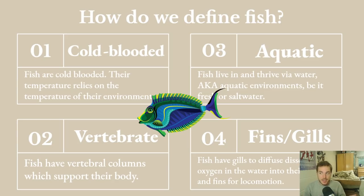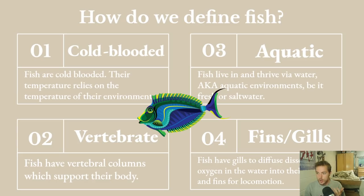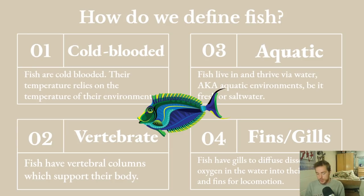Number three, fish live in and thrive via water — aquatic environments — whether it's freshwater, saltwater, or brackish water in between. Fish are aquatic by definition. And four, fins and gills: fish have gills that diffuse dissolved oxygen from the water into their blood, and fins for locomotion. These are the four general rules to determine whether something is a fish. Of course, all relationships are determined evolutionarily for the most part, so these are just convenient morphological traits we can use to associate things.